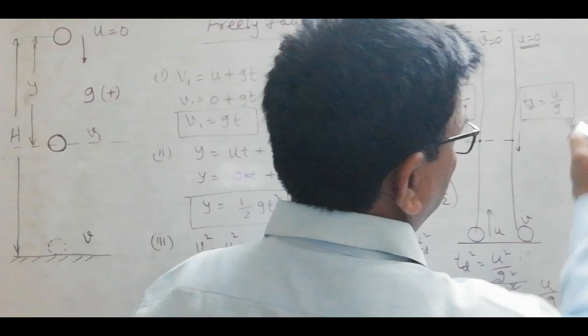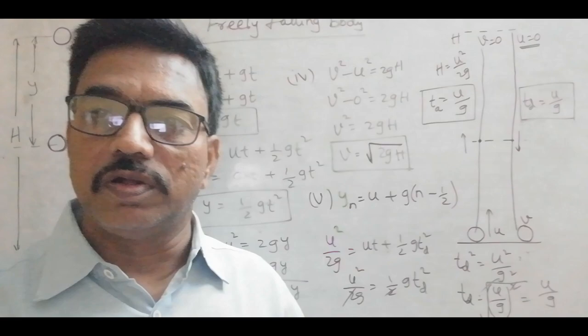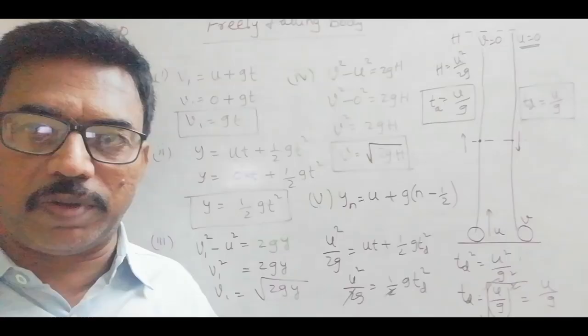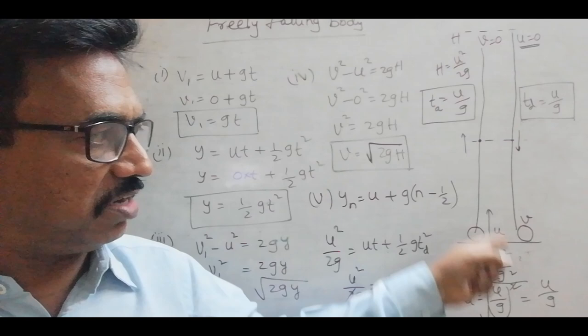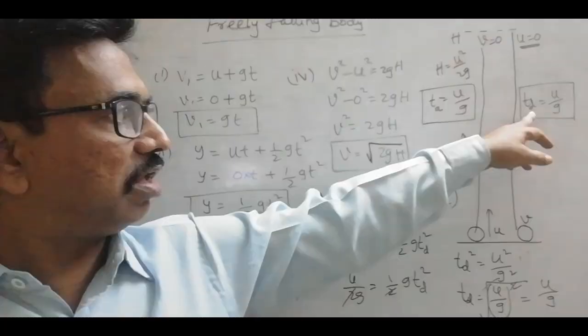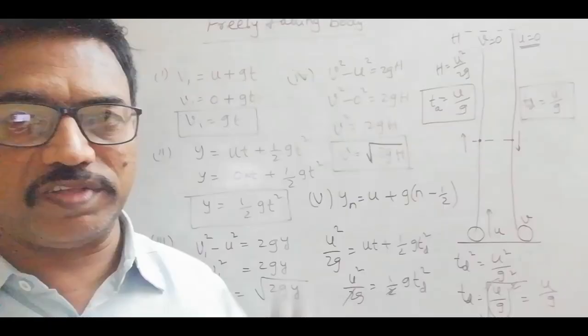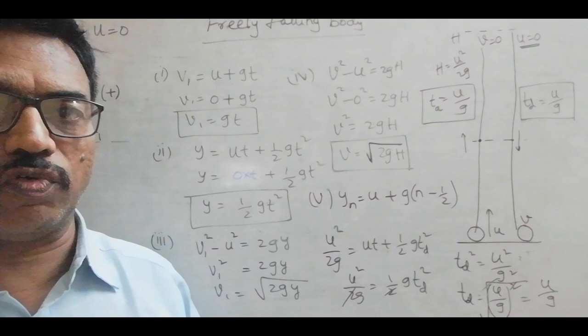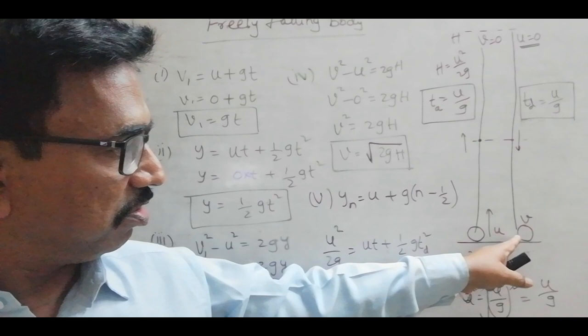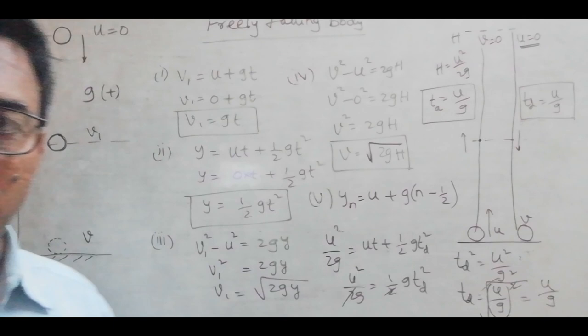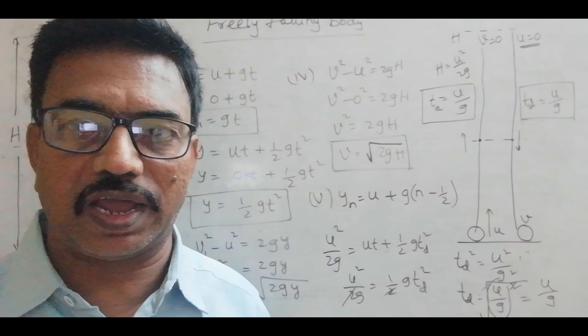In the case of a body projected vertically upwards, the time of ascent is the time taken by the body to reach the maximum height from ground level, which is equal to U by G. In the same way, the same body when it descends, the time taken to reach from maximum height to the ground level is also equal to U by G. So this is how we can derive the expressions for various parameters like maximum height, the velocity of the body just before reaching the ground, and time of descent for a freely falling body. Thank you very much. In some other video, I will explain some other kinematic relations. Thank you.